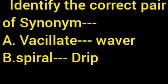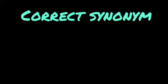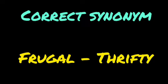Question next: identify the correct pairs of synonyms. The correct answer is 'vacillate and waver' — this is the correct option. Next: find the correct synonyms. The correct answer is 'frugal and thrifty' — this is the correct answer.